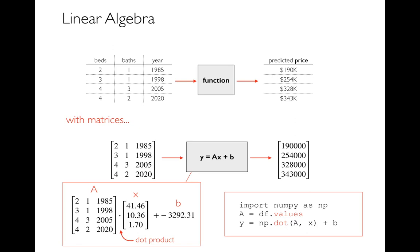The tradition is you say import NumPy as NP for short. And if I have a data frame, it turns out that data frame dot values gives me a NumPy array. And so here I'm pulling that out of the variable A. And then I'm doing that dot product between A and X. I'm just adding a number to get the output. So I'll be spending a lot more time on this.